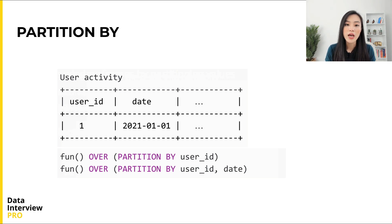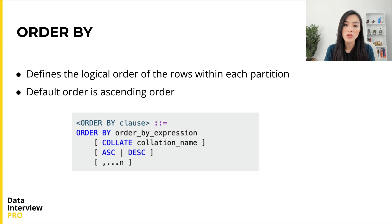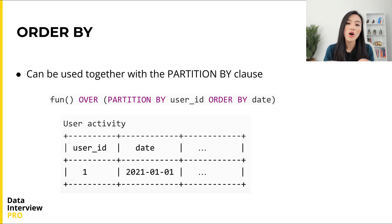For example, using a user activity table with user_id and date, if we write PARTITION BY user_id, the rows with the same user_id are considered one partition. We can also partition multiple columns — writing PARTITION BY user_id, date means rows with the same user_id and same date are one partition. The ORDER BY argument defines the logical order of rows within each partition; the default is ascending. We can order by one or multiple columns or an expression, and it can be used alone or together with PARTITION BY. For example, PARTITION BY user_id ORDER BY date creates an ordered window of all activities per user in ascending date order.